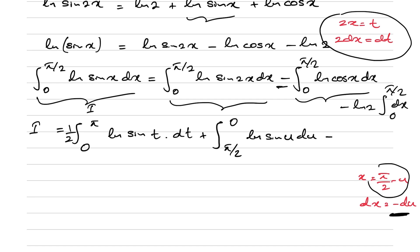So cosine of x becomes cosine of (π/2 − u) = sin(u), and with the swapped limits running from 0 to π/2, the cosine integral becomes the integral of ln(sin x) dx from 0 to π/2, giving minus π/2 times ln(2).